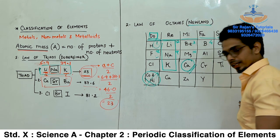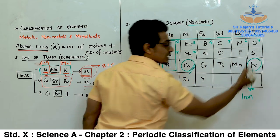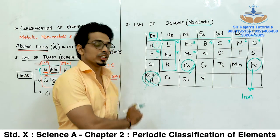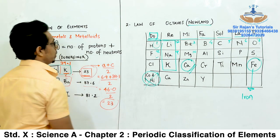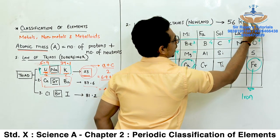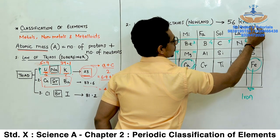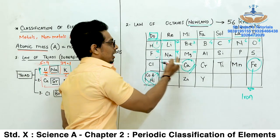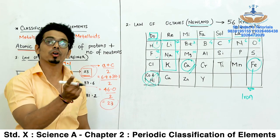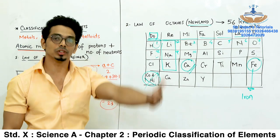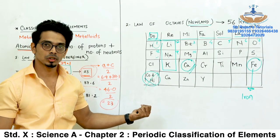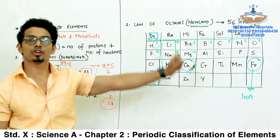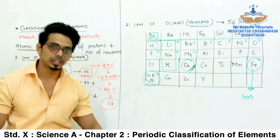We refer Mendeleev as genius because he left some vacant spaces in between the periodic table for elements which had not been discovered yet. He gave them specific names based on neighboring elements. For example, the vacant space next to boron was named 'ekaboron.' Similarly, 'ekaaluminium' and 'ekasilikon.' He predicted the properties of undiscovered elements — for ekaboron, properties similar to boron; ekaaluminium, similar to aluminium; ekasilikon, similar to silicon. When ekaaluminium was later discovered as gallium, Mendeleev predicted its atomic mass as 68 and the actual atomic mass of gallium is 69.7.